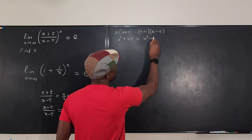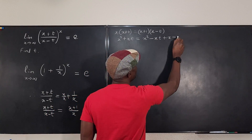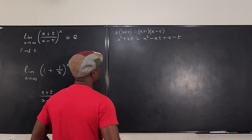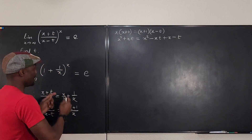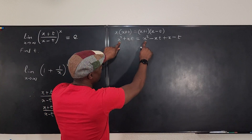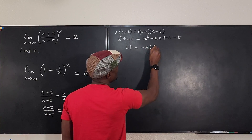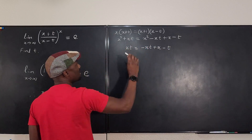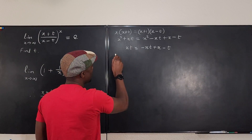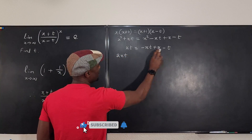Distributing, I have x squared plus xt on the left, and on the right I have x squared minus xt plus x minus t. Remember, the objective is to find t. There's x squared on both sides, so those cancel. I have xt equals negative xt plus x minus t. Taking all terms containing t to the left gives xt plus xt, which is 2xt, plus t equals x.